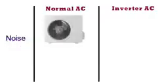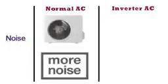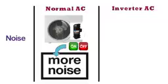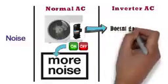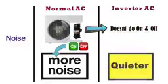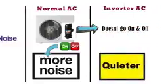Noise: In case of normal AC, the outdoor unit creates more noise compared to inverter AC. The compressor motor turns on and off throughout its operation, which causes a significant amount of noise. Whereas in case of inverter AC, the compressor motor does not go on and off all the time, hence operation is much quieter.